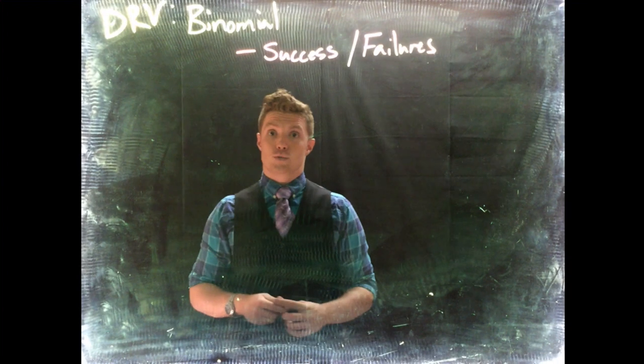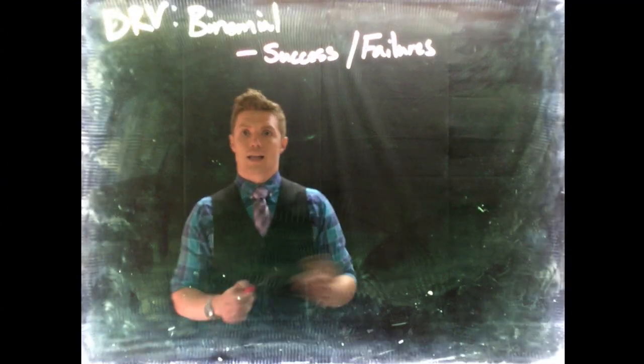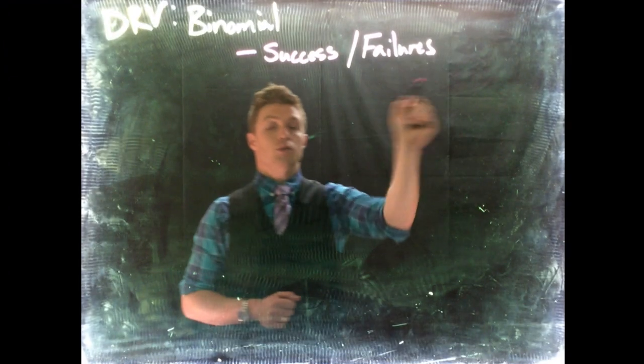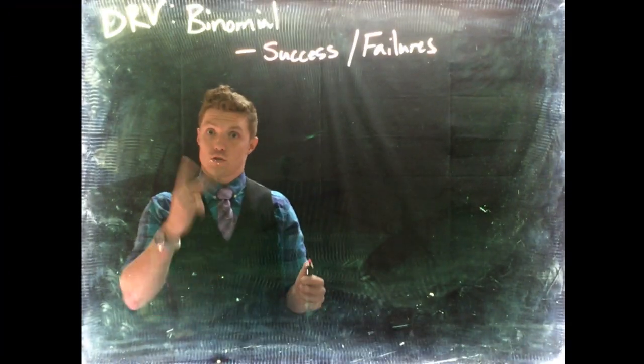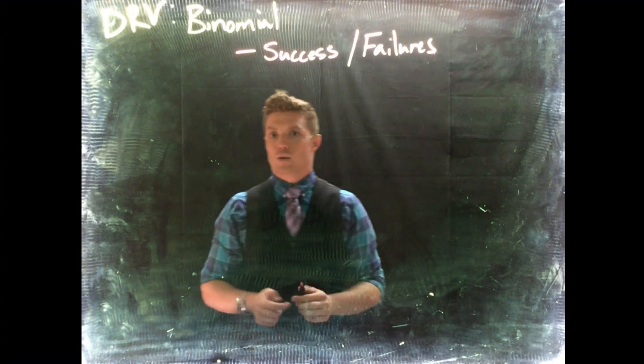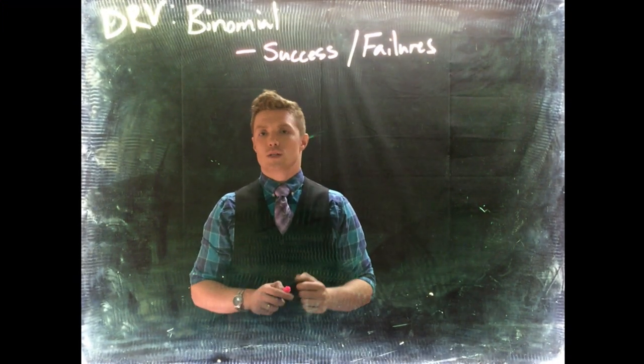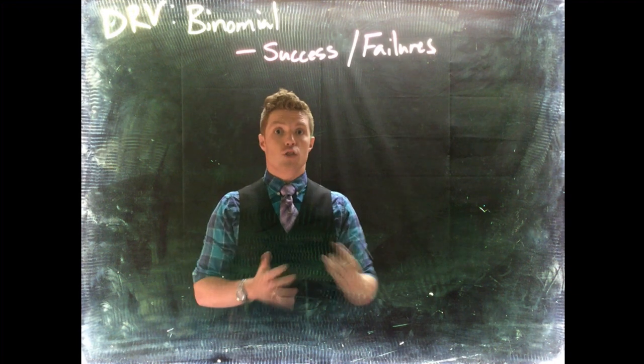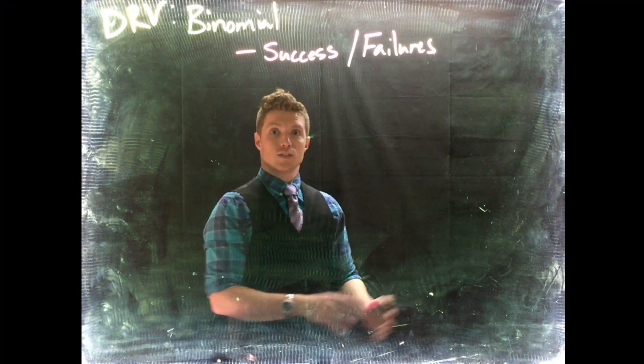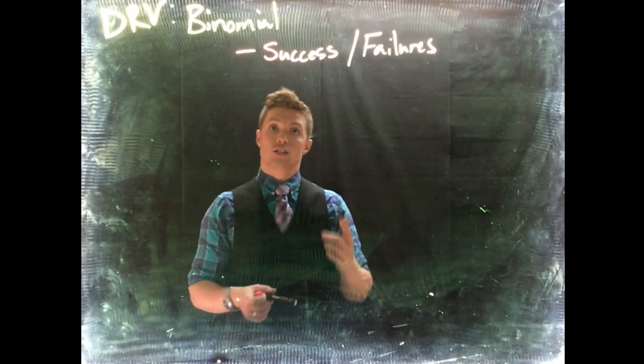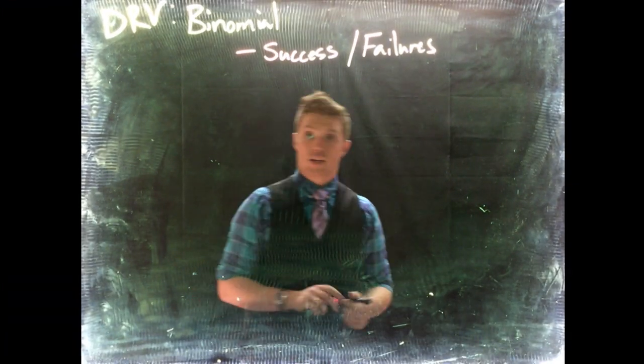Binomial distribution makes this really easy. We need a couple of things. One thing that we need is it has to be able to be determined to be done in successes or failures. So there's only two options here. If we're rolling a dice and we roll it four times, we want to know what's the probability of rolling at least three sixes. So that each time it's either you roll a six or you don't roll a six. It's defined in terms of successes and failures.